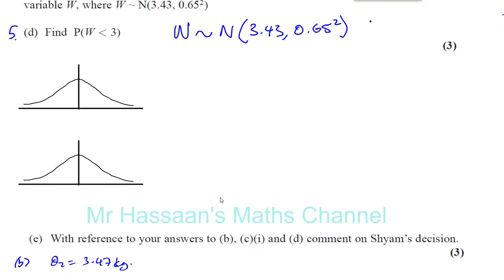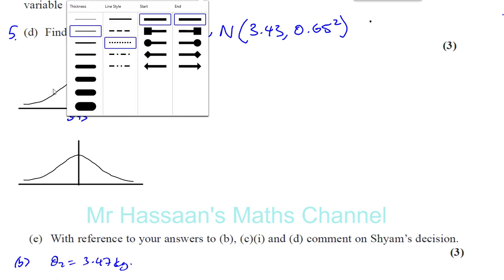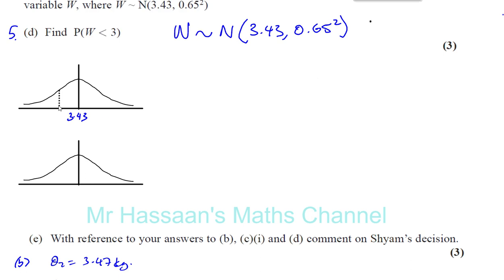The mean is 3.43, placed at the centre of the normal distribution curve. We want to find the probability that the weight is less than 3, which is to the left of the mean. The area under this curve tells us the probability — the total area is 1 unit. We want to find what proportion this shaded area is of the whole.